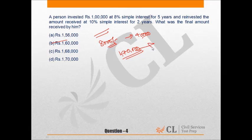Now he reinvested this amount at 10% simple interest for 2 years. So for 2 years he will get Rs 1 lakh 40,000 into 10 upon 100 that is equal to Rs 28,000.